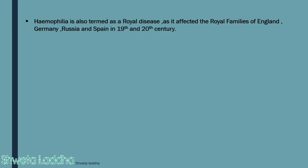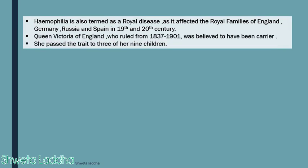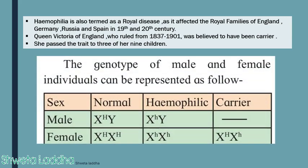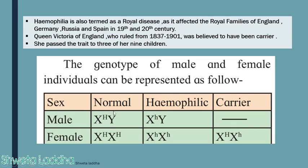Hemophilia is also termed a royal disease, as it affected royal families of England, Germany, Russia, and Spain in the 19th and 20th centuries. Queen Victoria of England, who ruled from 1837 to 1901, was believed to be a carrier and passed this trait to nine of her children. Regarding genotypes: a normal male is X^H Y, a hemophilic male is X^h Y. For females: homozygous dominant (X^H X^H) is normal, homozygous recessive (X^h X^h) is hemophilic, and heterozygous (X^H X^h) is a carrier. Males are never carriers.